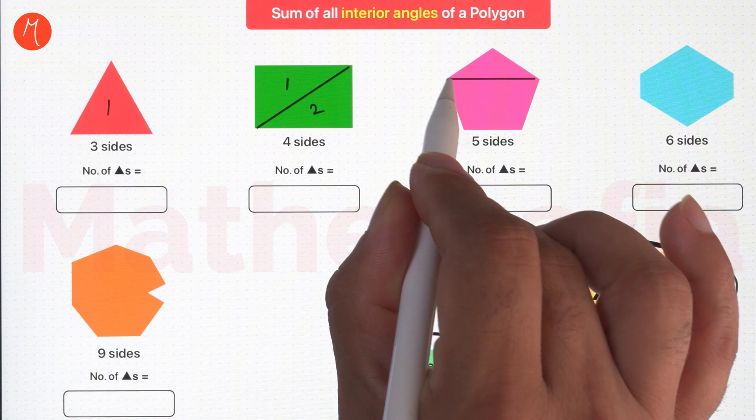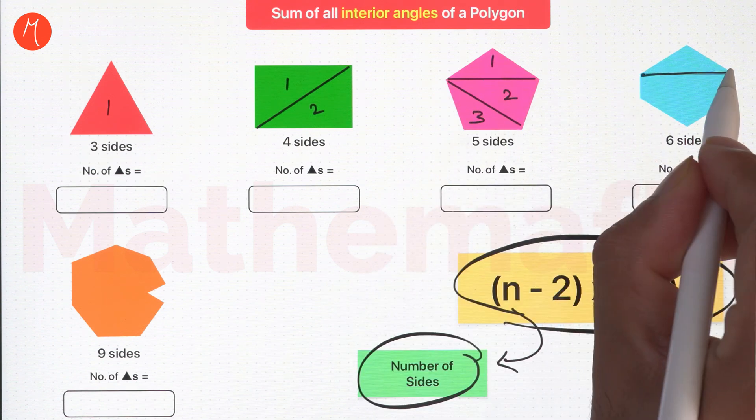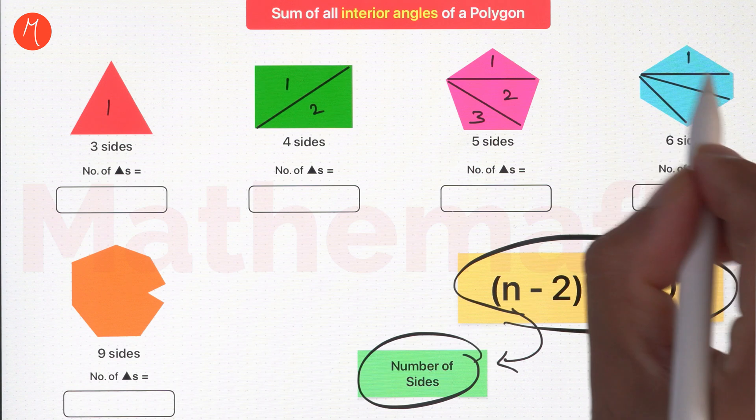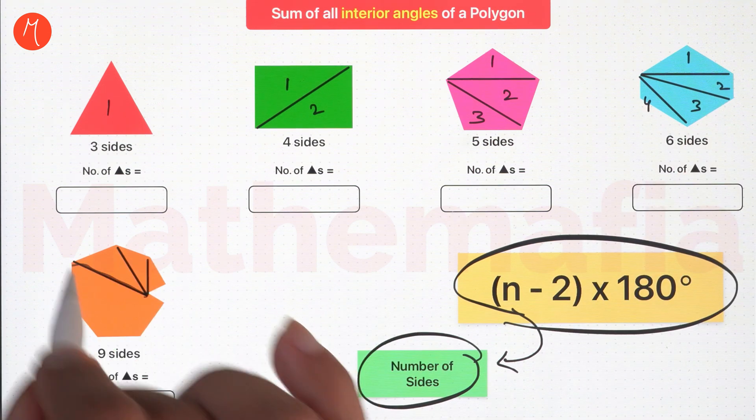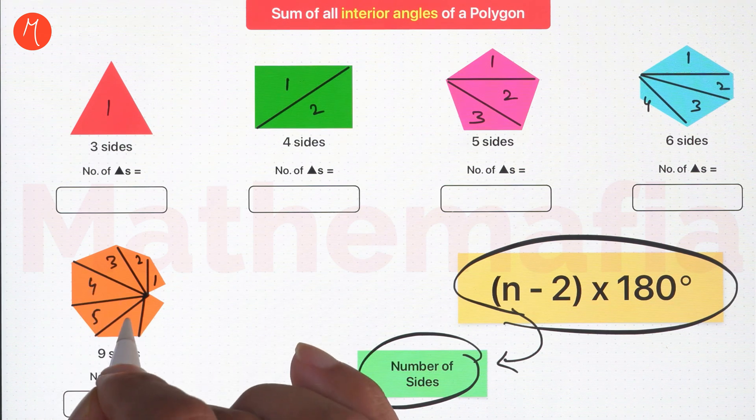In this pentagon, we can draw three triangles. In hexagon, we can draw four triangles. Similarly in this nine-sided polygon, we can draw seven triangles.